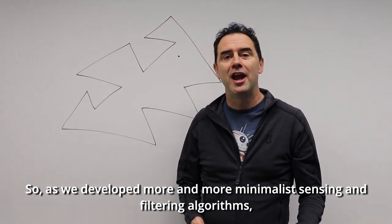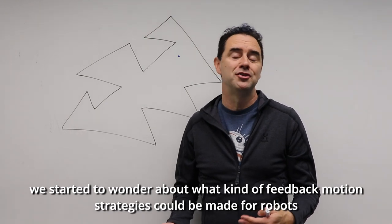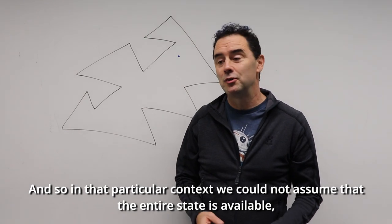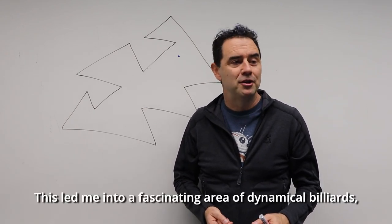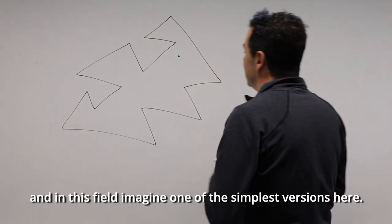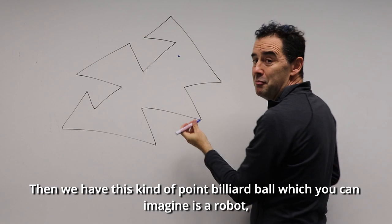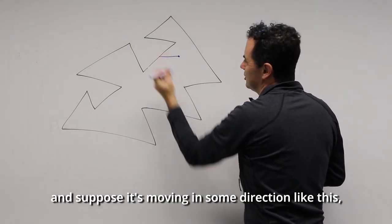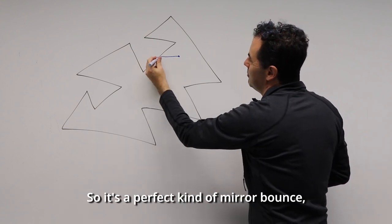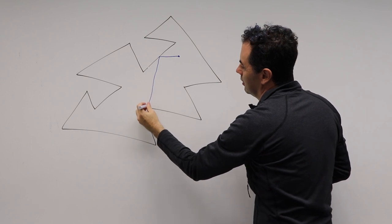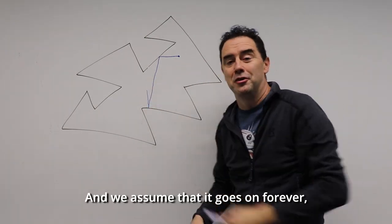As we developed more minimalist sensing and filtering algorithms, we started to wonder about what kind of feedback motion strategies could be made for robots using these filters — where you can't assume the entire state is available, but only get just enough information to be helpful for solving some tasks. This led me into the fascinating area of dynamical billiards. Imagine a polygonal two-dimensional environment with a point billiard ball moving in some direction. When it hits the wall, the angle of incidence equals the angle of reflection — a perfect mirror bounce — and it continues on its way.